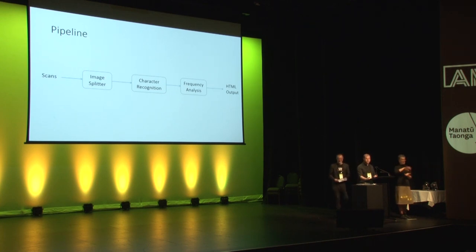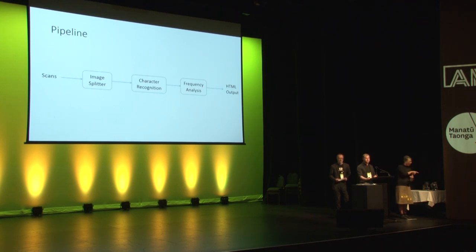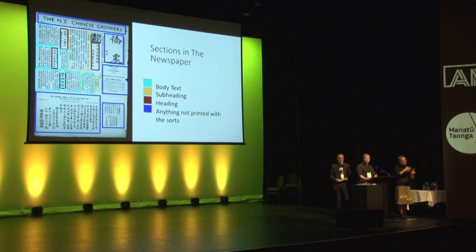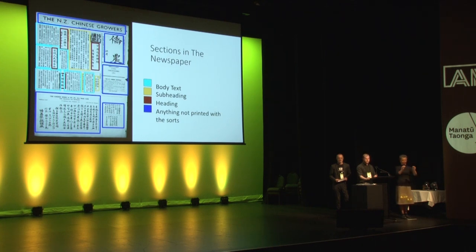To process a page of the newspaper, there are a number of steps required. We had to find out where the characters were that were printed by the type. We had to turn those characters into machine-readable format and we had to do frequency analysis to find out how many there were of each one. The first step, layout analysis, was not trivial, as the layout of each page changed a lot between pages and between issues. The pages also contain sections of ads which contain Chinese characters that were not printed by the type, so we wanted to ignore them.